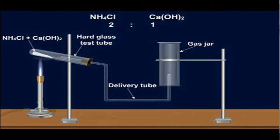When calcium chloride and water vapor are produced during heating, there is a possibility of cracking of the hard glass test tube. The gas obtained is passed through a lime tower to absorb moisture.